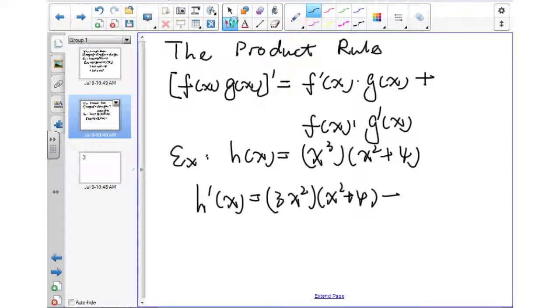Now we put the plus sign and then we let the x cubed alone times the derivative of x squared plus 4, that will be 2x.